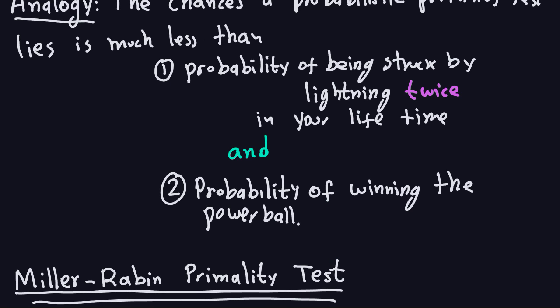In the next video, we're going to look at the Miller-Rabin primality test, which is one of the most famous probabilistic primality tests. Java actually uses an implementation of this test, combined with some other techniques, to check for primality. The Miller-Rabin test is based on number theory, and I'll talk you through the underlying theorem in the next video.